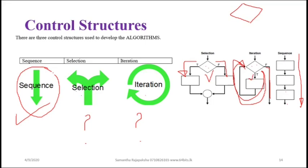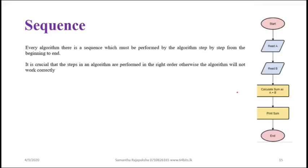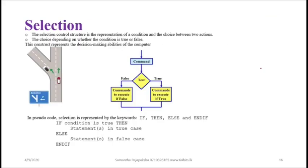Every algorithm has a sequence represented by arrows showing order from beginning to end. Selection may or may not be present. Think of a road junction - you either go straight or turn. That decision is represented by the diamond shape. Based on your requirement you make a decision: if it is true you go one direction, if it is false you go another direction.